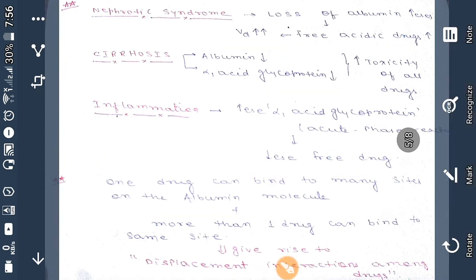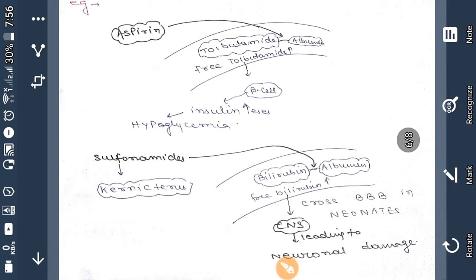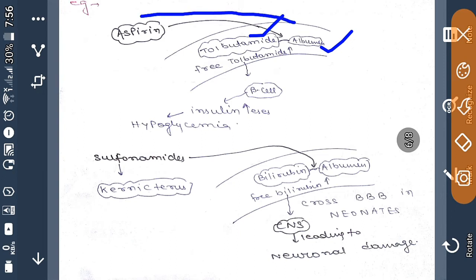I am taking an example of the displacement interaction. Suppose tolbutamide is bound to albumin, so free tolbutamide is in normal concentration. Suppose you have given aspirin to that patient, then aspirin also binds to albumin. So aspirin will bind to albumin and binding of aspirin to albumin leads to increasing free tolbutamide.